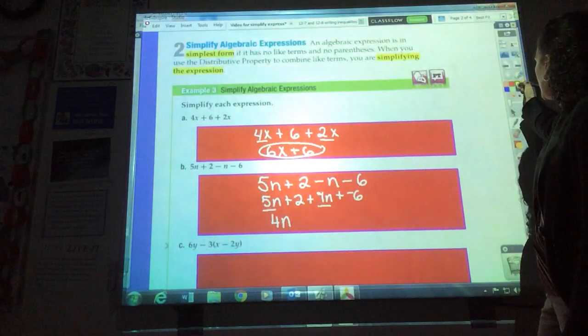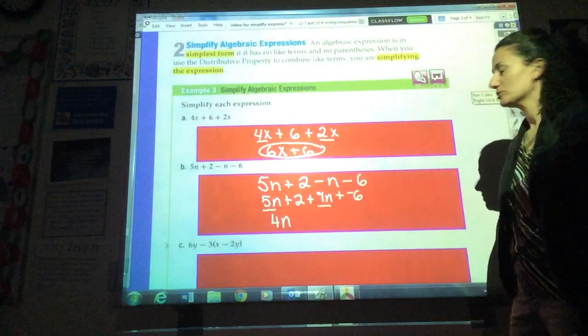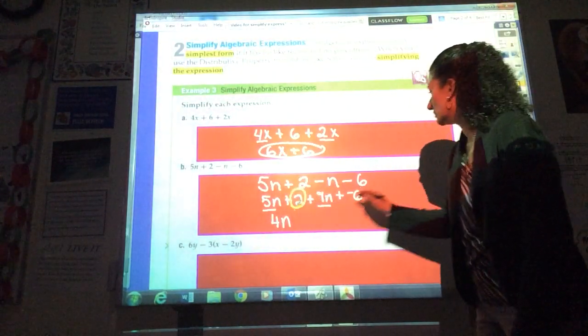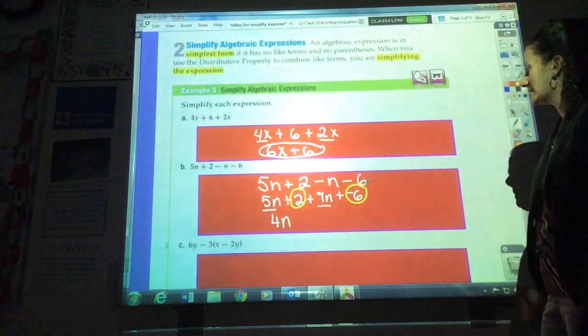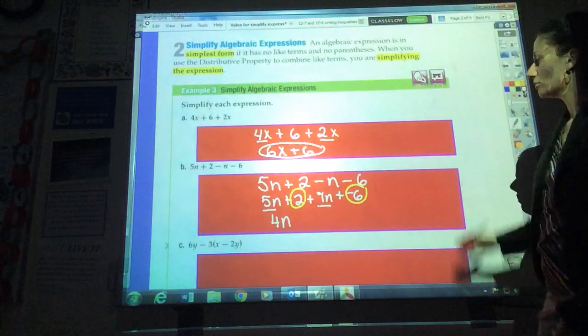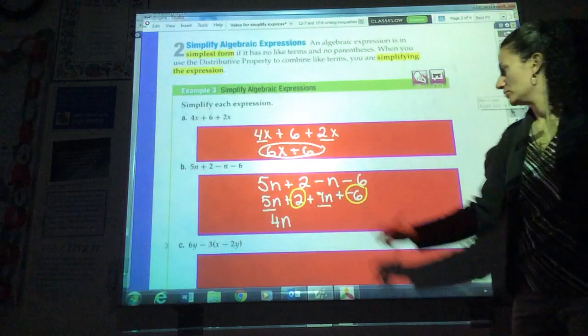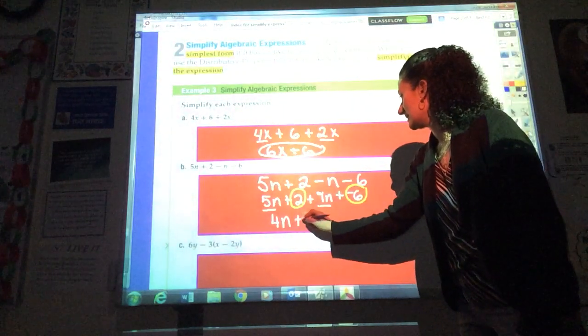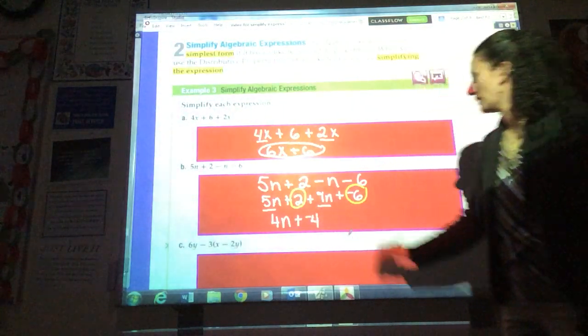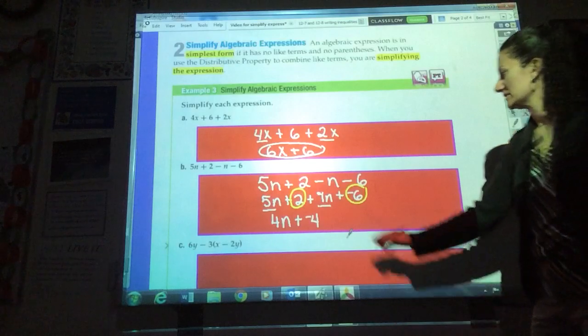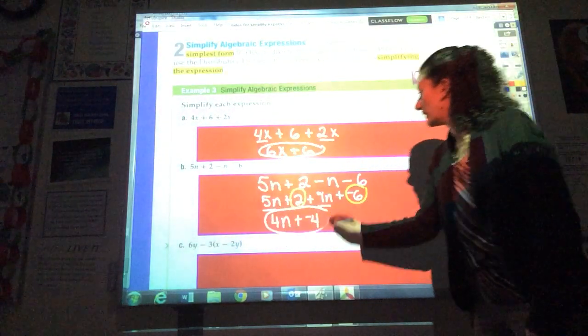Now I'm going to look for any other like terms. I have no other variable terms, but I do have the constants, 2 and negative 6. Because those are just regular old constants, I can add those. 2 plus negative 6 is negative 4. So my final answer is 4n plus negative 4, or I could write 4n minus 4.